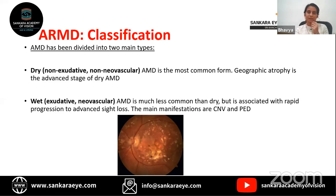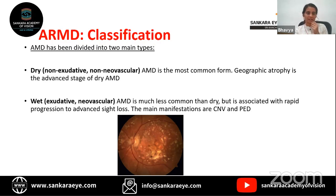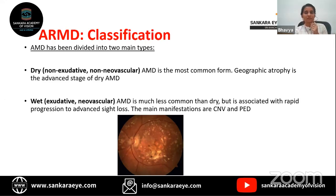ARMD is classified into two major types: dry AMD (non-exudative or non-neovascular AMD), where symptoms include gradual vision loss, fluctuation in visual acuity, better vision in bright light, with geographic atrophy as the advanced stage; and wet AMD (exudative or neovascular AMD), which is less common but associated with rapid progression of vision loss. Wet AMD's main manifestations are choroidal neovascularization and pigment epithelium detachment, with symptoms including central scotoma and metamorphopsia.